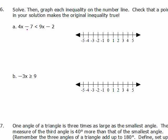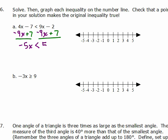The first thing we want to do is get the variables on the left side and the constants on the right. So I'm going to subtract 9x from both sides to get the variables on the left, then add 7 so the constants are on the right. That gives me negative 5x is still less than — negative 2 plus 7 is 5.